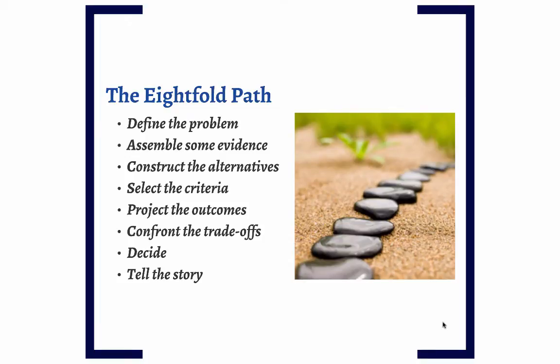The Eightfold Path is broken down into defining the problem, assembling the evidence, constructing the alternatives, selecting the criteria, projecting the outcomes, confronting the tradeoffs, deciding on which you want to choose, and then telling a good story. If you follow the path and apply compassion and reason, you will have a well-developed policy analysis. One of the beauties of this approach is that it helps you get the job done — too often, people get so far in the weeds trying to build the perfect policy, they forget not to let the perfect be the enemy of the good.